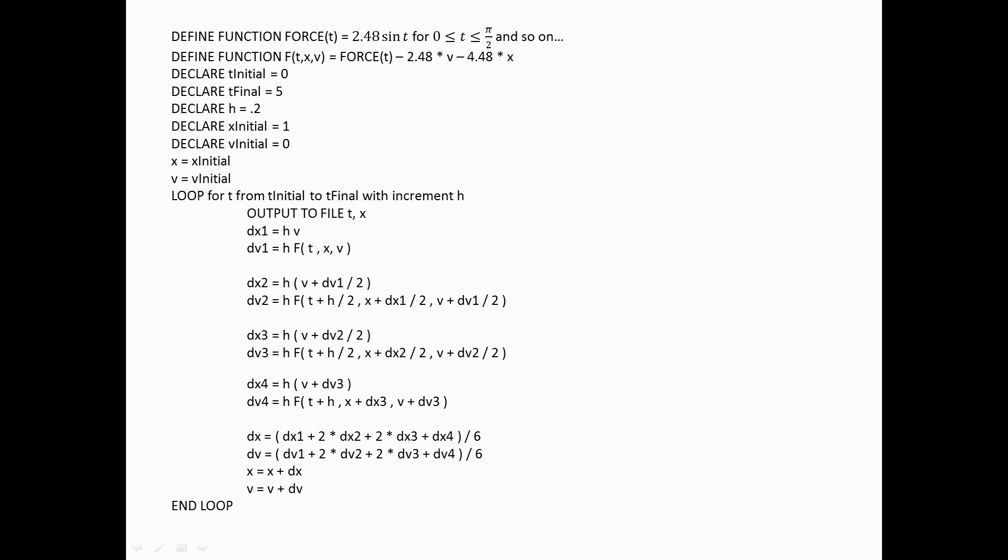Now that we've completed the setup, we can take all the information we have and start writing the code. In the pseudocode, we first define the force function. We can use if statements to differ between the piecewise pieces of the function in different ranges of time. Then, we define the function that is the slope of v.